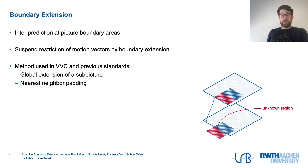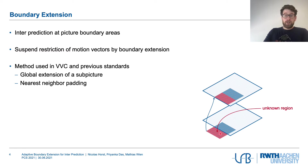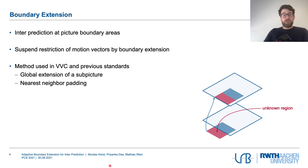Boundary extension is used when we do inter prediction at picture boundary areas. The picture to be coded references a reference picture where the content matches well, but we need a prediction signal for the whole block, so information for part of the block is missing. We extend the picture beyond its boundaries to not restrict the motion vectors. The method used in VVC and previous standards is a global extension of a sub-picture using nearest-neighbor padding — extending the border pixels perpendicularly to the boundary.